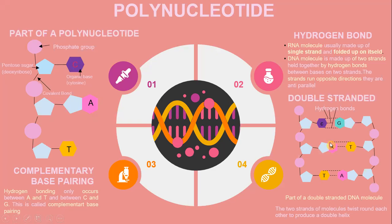In the double-stranded structure, you have the link between the phosphate group, pentose sugars, and the organic base cytosine, which is linked to guanine by a hydrogen bond. Likewise, adenine links to thymine. On the other strand, thymine links back to adenine. This is part of the double-stranded DNA molecule where the two strands are held together by hydrogen bonds.